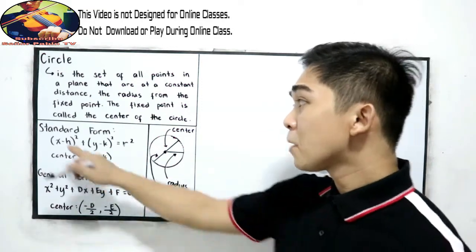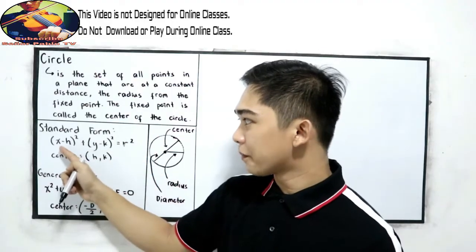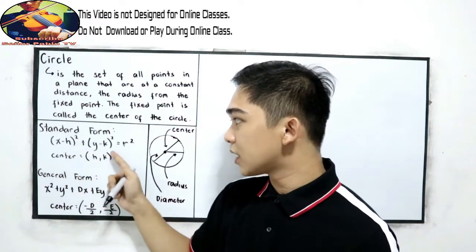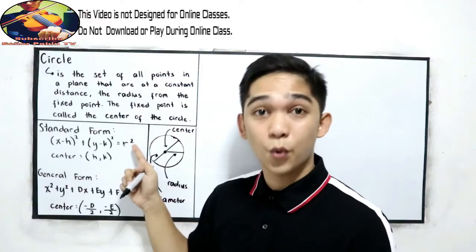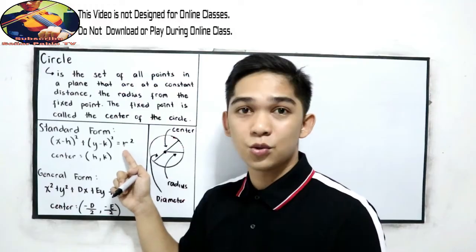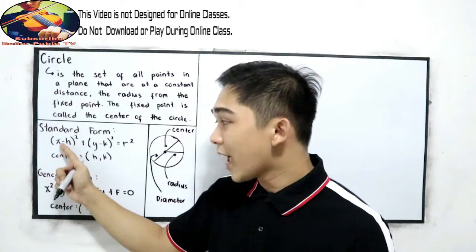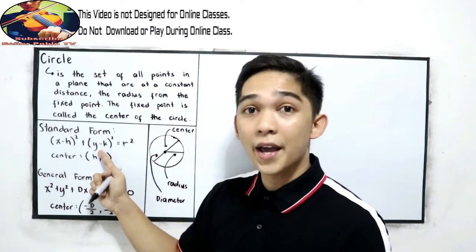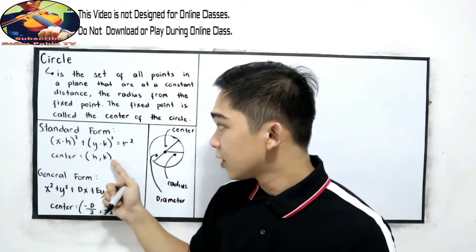In our circle, we have the standard form. The standard form is: quantity x minus h squared, plus quantity y minus k squared, is equal to r squared. Here, r is our radius. And if we are going to find the center, the center is the point (h, k).